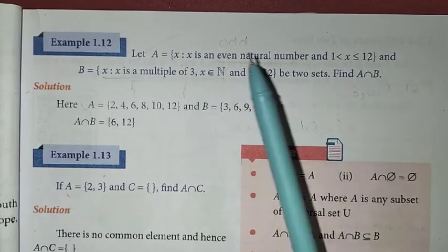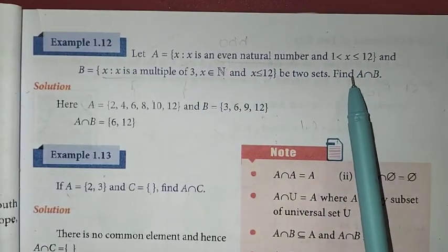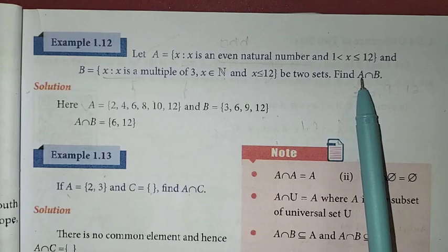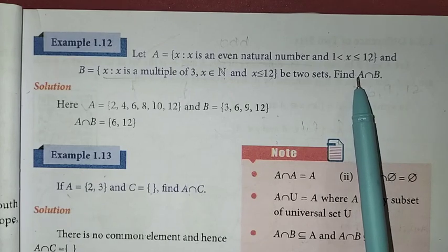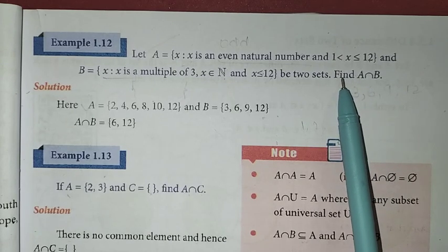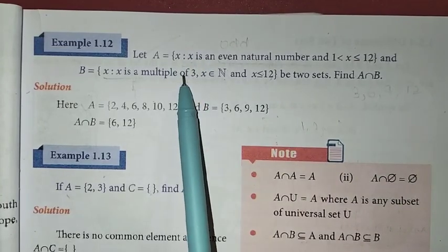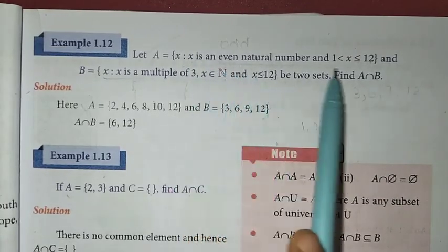So first, we find the roster form. That means set A, set B, then find intersection. Intersection is very simple - common elements form the intersection. Now, to find set A and set B, we can find each one.